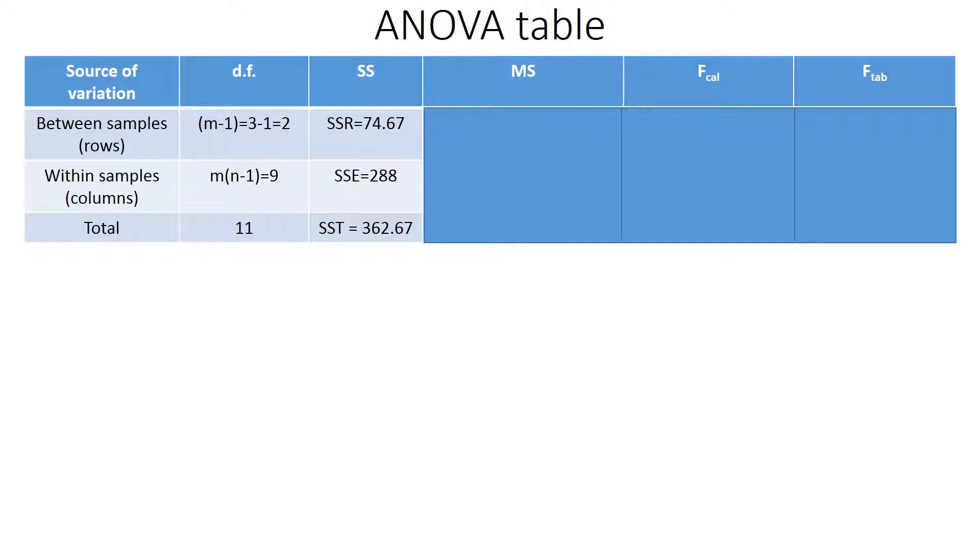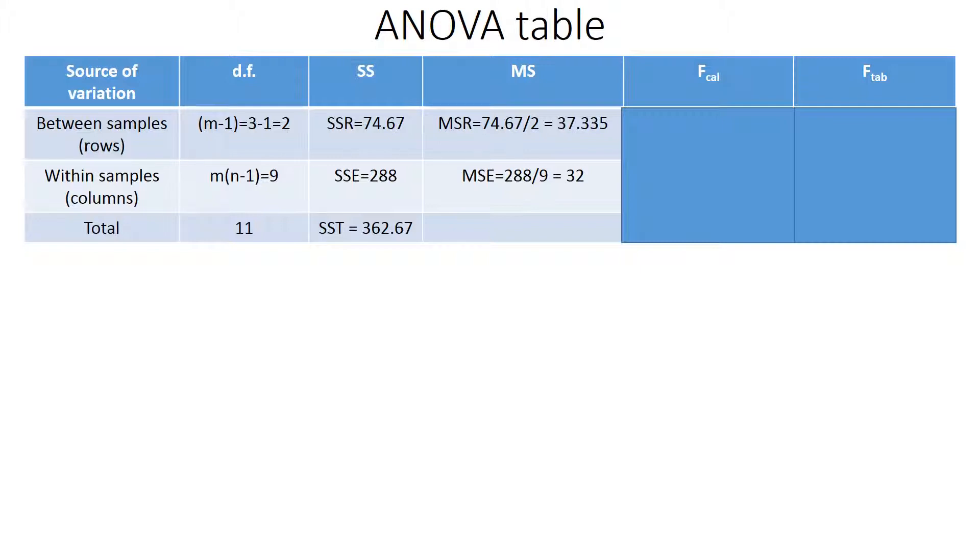SSR is 74.67 and SSE is 288. That is why the total value is 362.67. Now MS: MSR is SSR by degree of freedom of rows, that is 74.67 divided by 2 equals 37.335. MSE is 288 divided by 9 equals 32. What will be our F calculated? F calculated is given by MSR by MSE, and that is 37.335 divided by 32 equals 1.16. This is our calculated value.